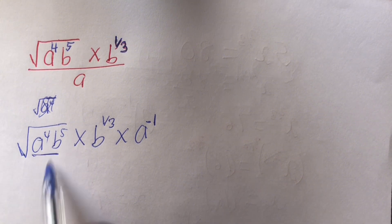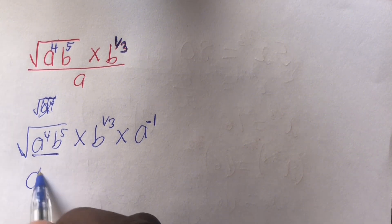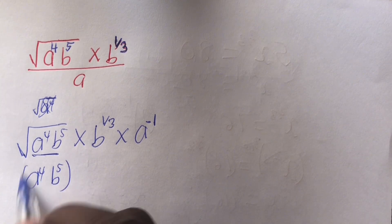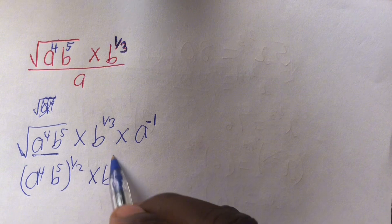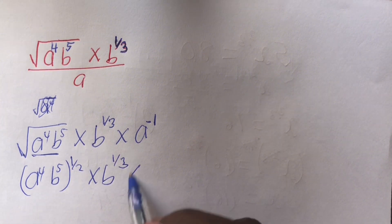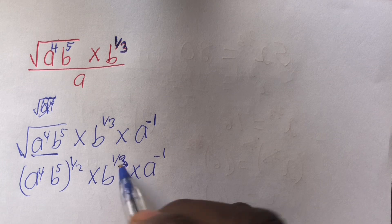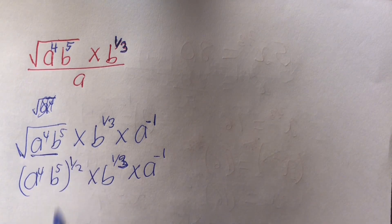Now, this one can be written as a power 4, times b power 5, to the power half, times b power 1 out of 3, times a power negative 1. Remember, square root means power half.